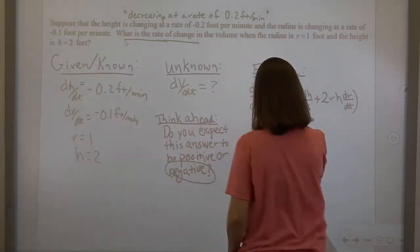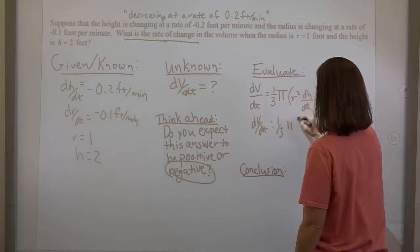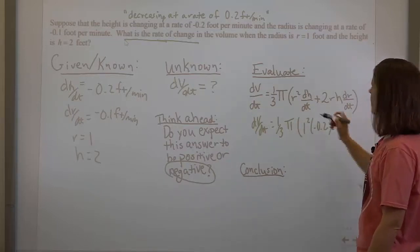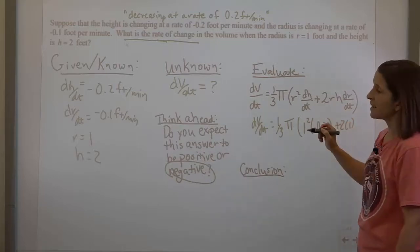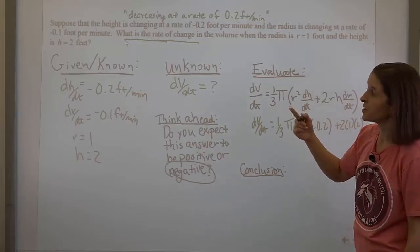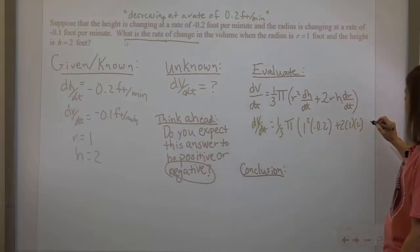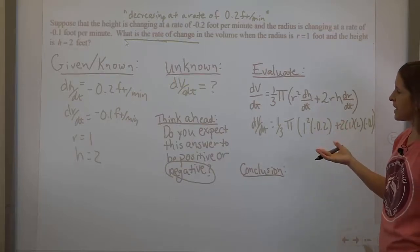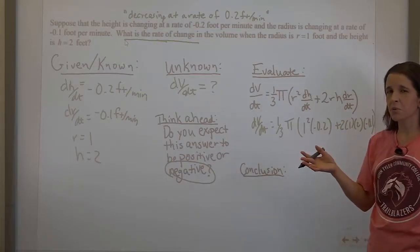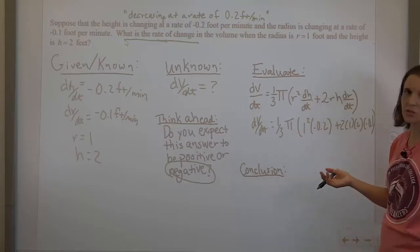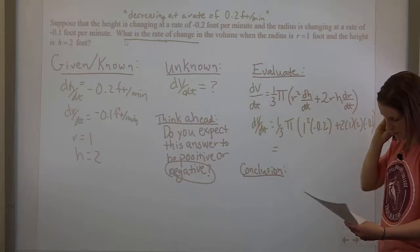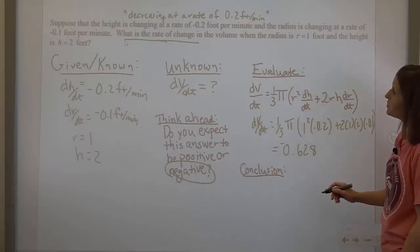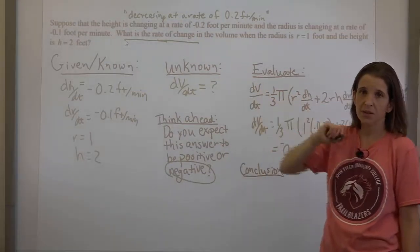Now we plug in the pieces: r was 1, dh/dt was negative 0.2, then we have 2r, h was 2, and dr/dt was negative 0.1. Then you're just evaluating this. In real-world problems, we usually want a decimal rather than an exact form. This works out to approximately negative 0.628. Depending on how the question asks you to round — if it's to one decimal place — you round accordingly.